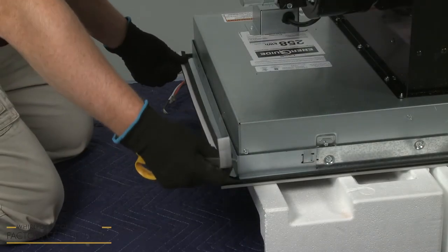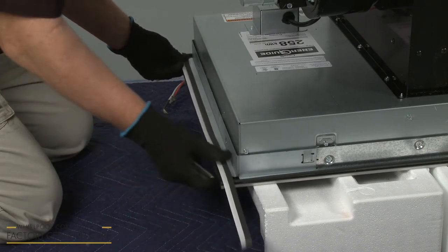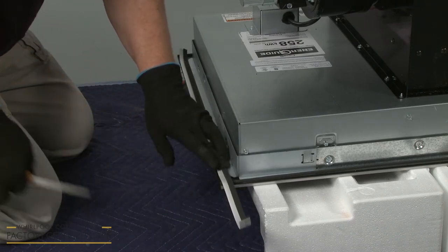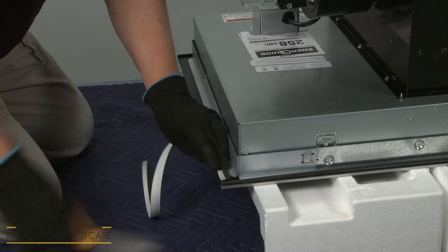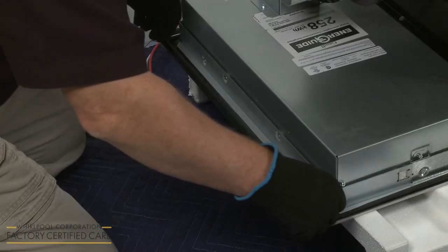Next, determine the appropriate length for the sides of the cooktop and cut the strips accordingly. Position the two strips.